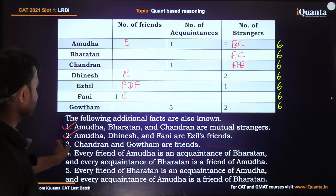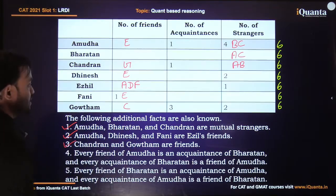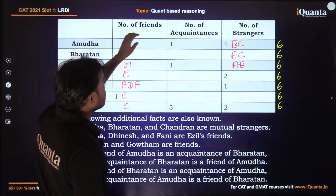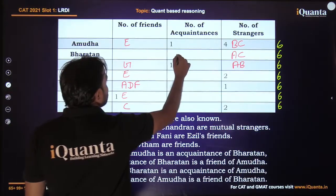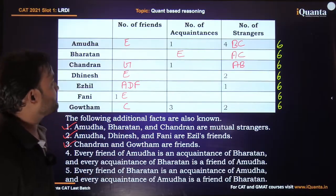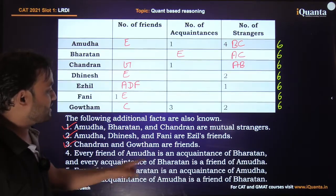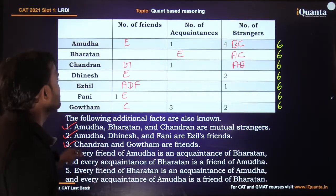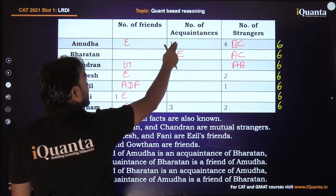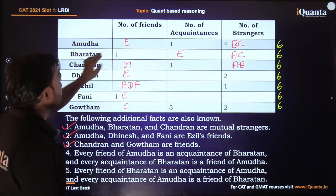Next, C and G are friends, so G is a friend of C and C is a friend of G. Then, every friend of A is an acquaintance of B and every acquaintance of B is a friend of A. Similarly, every friend of B is an acquaintance of A and every acquaintance of A is a friend of B. So whatever is in A's friends column appears in B's acquaintances column and vice versa.